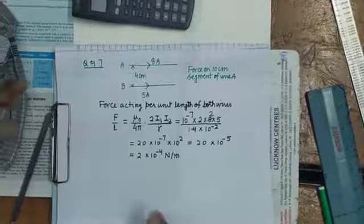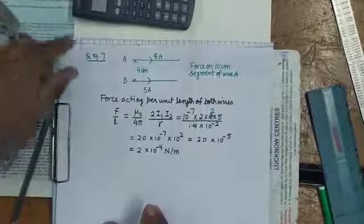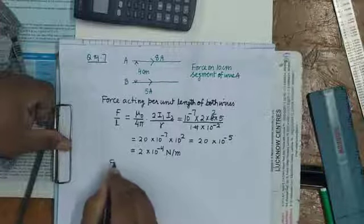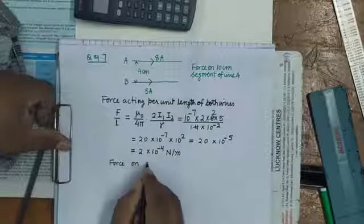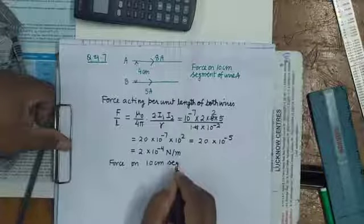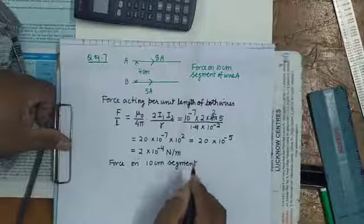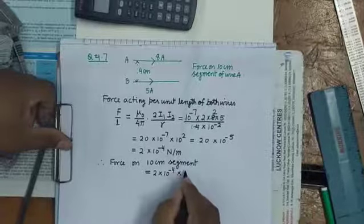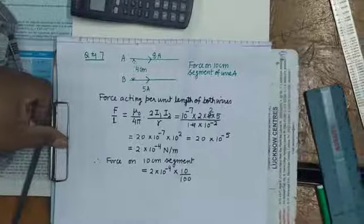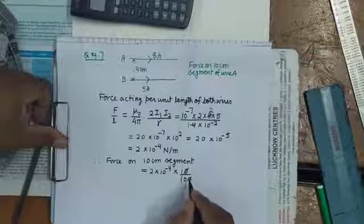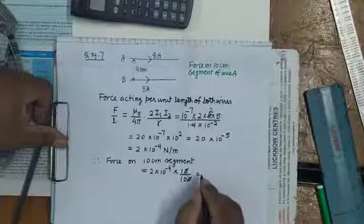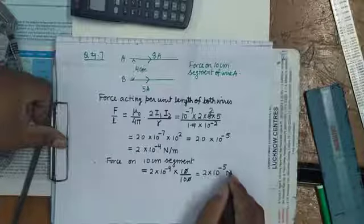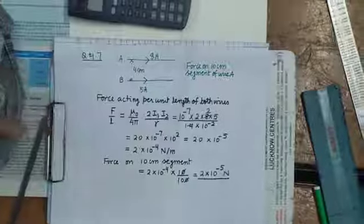So this is the force acting per unit length, meaning on 1 meter this much force will act. But you have to find the force on 10 centimeter. Therefore, force on 10 centimeter segment: on 1 meter, 2 times 10 to the power minus 4 is acting, so on 10 centimeters, that's 10 upon 100 meters. This will cancel, 10 will become 10 to the power minus 1, already there is 10 to the power minus 4, so 2 times 10 to the power minus 5 newton is the answer.